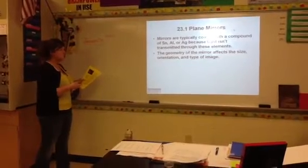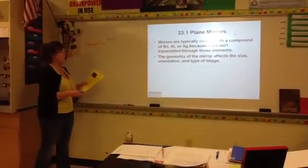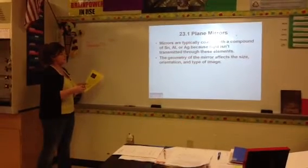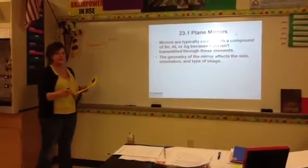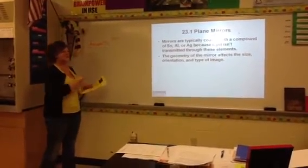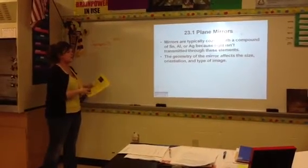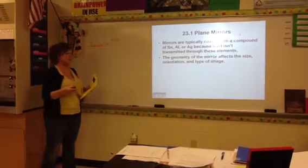First slide. You'll see that we have mirrors are typically coated with a compound of Sn, which is tin, Al, which is aluminum, or Ag, which is silver, because light isn't transmitted through these elements. So what will happen is light is going to hit those surfaces, and then they're going to reflect, they're going to bounce off. So in these cases, mirrors would be a certain type of reflection.